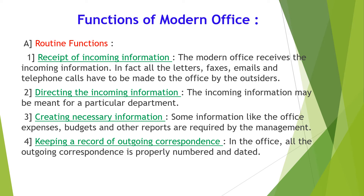The second routine function is directing the incoming information. The incoming information may be meant for a particular department. Information is directed by the office to the person who is authorized to receive it. The next function is creating necessary information. Some information like office expenses, budgets, and other reports are required by management so that they can make prompt and effective decisions. This information is created by the office.